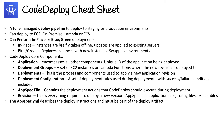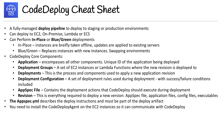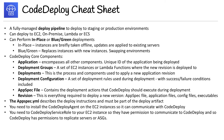Talking more in detail about the AppSpec YAML: it describes the deploy instructions and must be part of the deploy artifact. You also need to install the CodeDeploy agent on EC2 instances so it can communicate with CodeDeploy, and you need to create the CodeDeploy service role and add it to your EC2 instances so they have permissions to communicate to CodeDeploy.